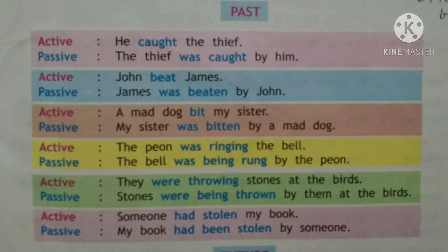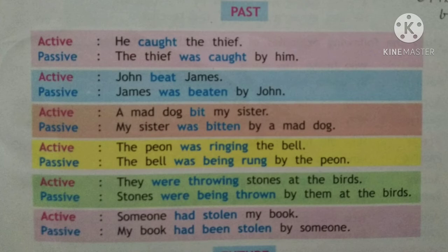For past perfect, the formation is: subject + had + verb three + object. To change to passive: object first, then had + been + verb three, then by + subject. Example: 'Someone had stolen my book.' Passive: 'My book had been stolen by someone' — add 'been' after 'had,' then verb three 'stolen.'